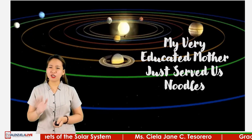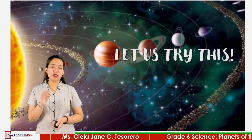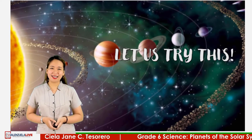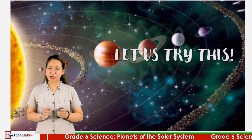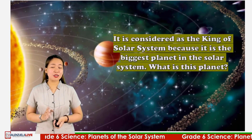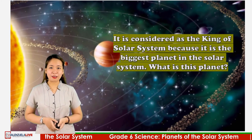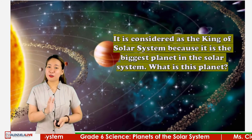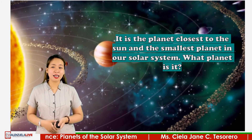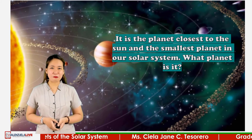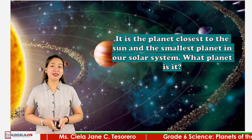I prepared a few questions to check your understanding of today's lesson. Let us identify which planet is being described in each sentence. First: it is considered the king of the solar system because it is the biggest planet. The answer is Jupiter. Next: it is the planet closest to the sun and the smallest planet in our solar system. The answer for this question is Mercury.